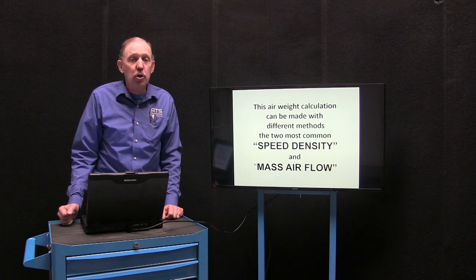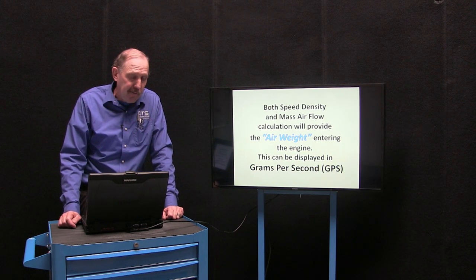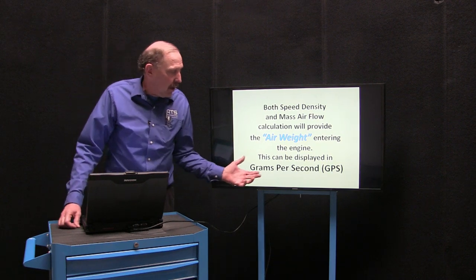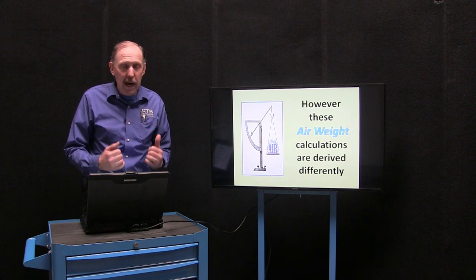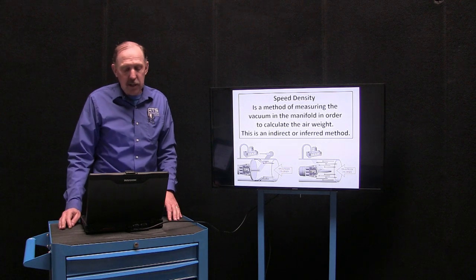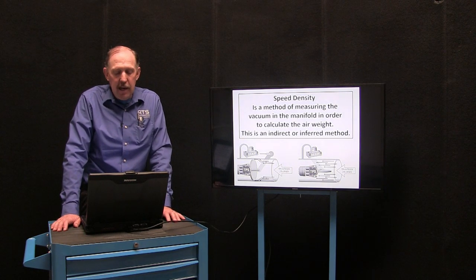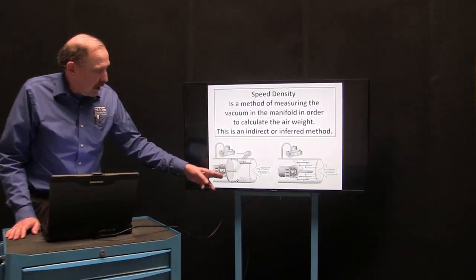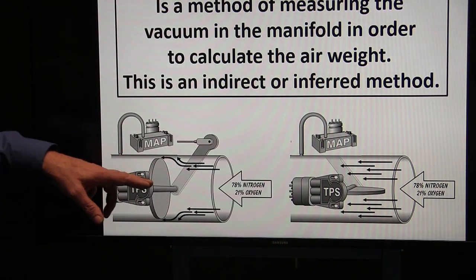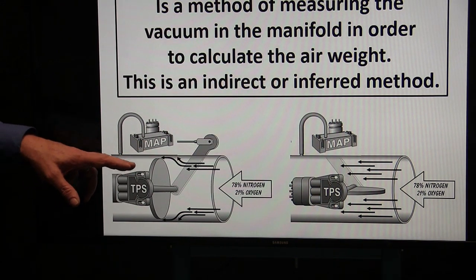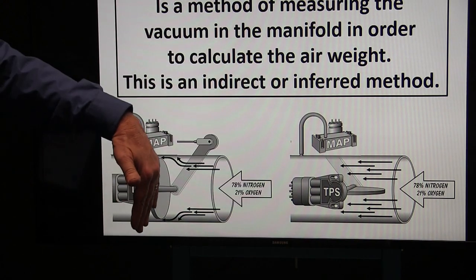Each one of these systems will be programmed, and a secondary default will come in when the program deems that sensor can no longer be trusted. Both the speed density and mass airflow calculations will provide the air weight, which can be displayed on your scan tool as grams per second. However, these two air weights are very different — the way the calculation is determined is quite different. The speed density method is looking at a vacuum or negative pressure behind the throttle plate in the intake manifold. When the throttle is closed, the MAP sensor is placed directly into the intake system and measures the negative pressure.